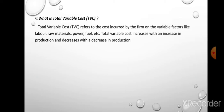When less is produced, less will be TVC or total variable cost. More produced means more total variable cost. If nothing is produced, total variable cost is also zero. It increases with an increase in production and decreases with a decrease in production. Remember that whatever may be produced, a firm or producer has to bear the total fixed cost — it is always fixed, whether more, less, or nothing is produced. But total variable cost is directly related with the amount of production.